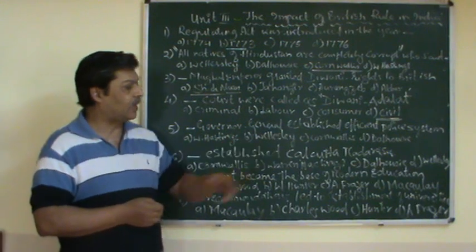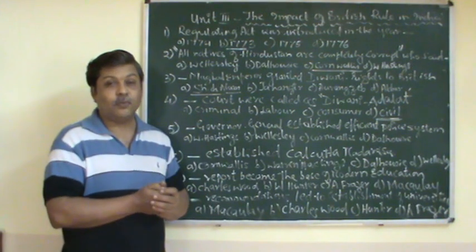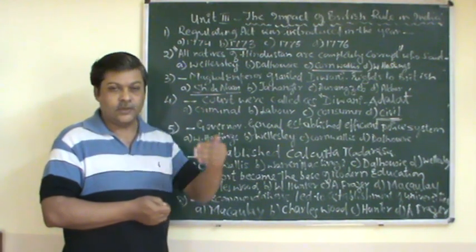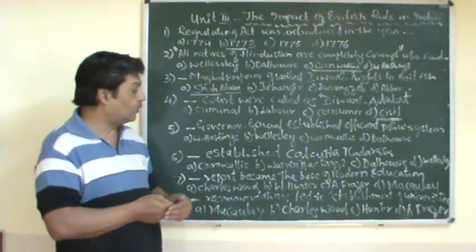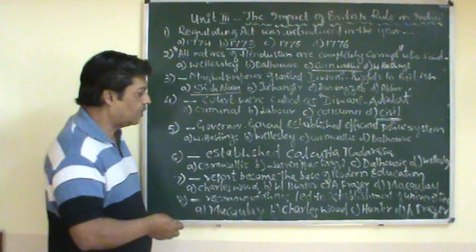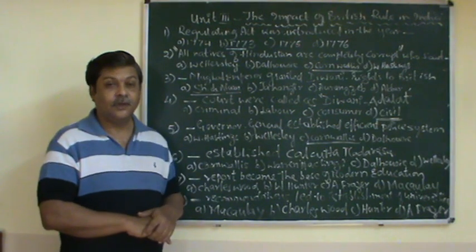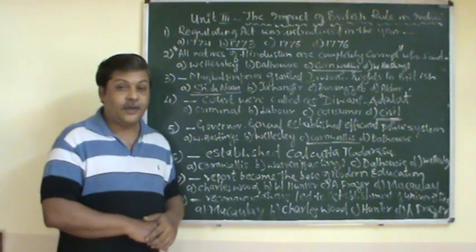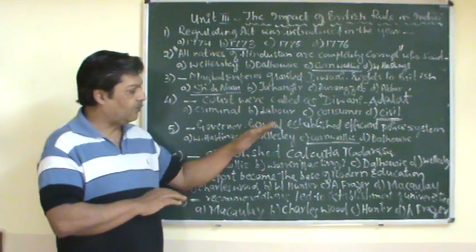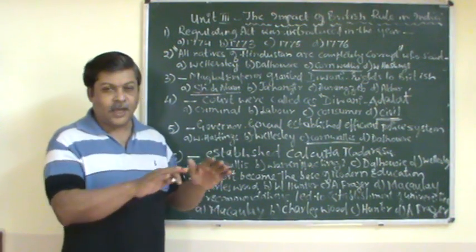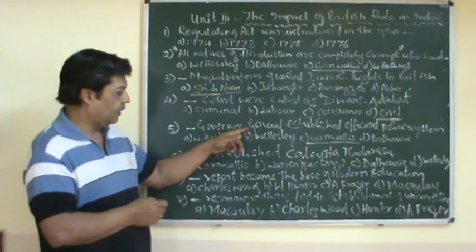Which Governor General established an efficient police system and police court, introducing rules and regulations for the working of the police department? The answer is Cornwallis. He established the post of Superintendent of Police. Cornwallis is known for his police reforms, and this was accomplished during his Governor Generalship.